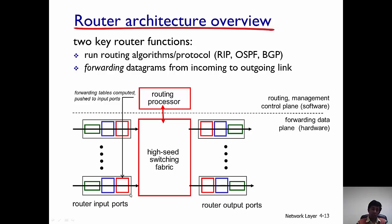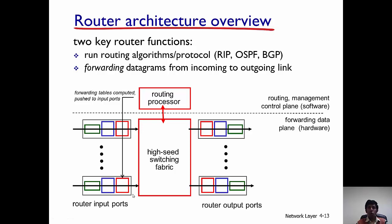Now we will discuss each of these sections in greater detail. We'll first look at the router's input ports, then talk about the switching fabric, and then the router's output ports. During this discussion, you will also understand how queues build up within a router and how datagrams can get lost and congestion can take place.